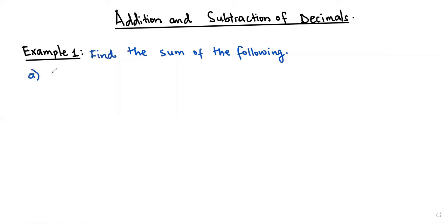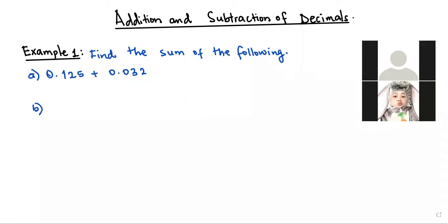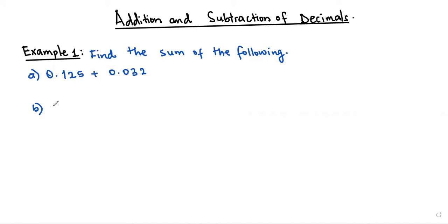We have part a: 0.125 plus 0.032, and part b: 28.83 plus 110.694. As we begin to do addition and subtraction of decimals, note that the decimal points must be aligned, and the digits in the same place must be aligned also.